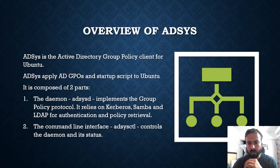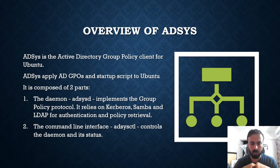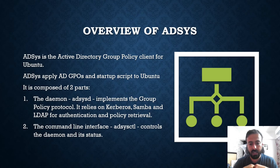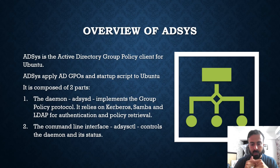Now, what is ADSys? This is the Ubuntu Active Directory client. It helps implement group policies and startup scripts on Ubuntu machines. It uses the ADSys daemon, which can authenticate via LDAP, and it relies on Kerberos and Samba for policy implementation and retrieval. The command-line interface is ADSys — the ADSysctl command controls the daemon and its status, and we can start and stop the ADSys service with this ctl command.